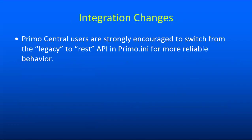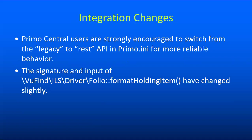We've made a couple of changes to our integrations with third-party services. If you're a Primo Central user, you are strongly encouraged to go to primo.ini and change your API setting from 'legacy' to 'rest' in order to take advantage of the newer and more reliable API. Also, in the Folio ILS driver, the format_holding_item method has had some small changes to accommodate some improvements to the driver, so if you've customized that method in a local subclass, take a look at the upstream code and make sure you're still correctly aligned with it.